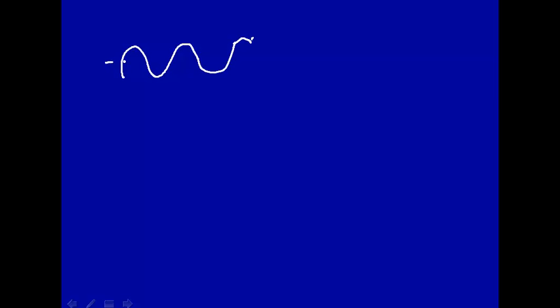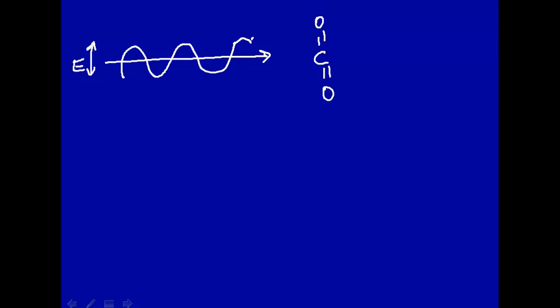Here we have an electromagnetic wave coming into the sample. The direction of propagation is this way, and the electric field oscillates in this direction here, like a transverse wave. Note that this E represents electric field rather than energy. Over here we put a molecule — let's use the carbon dioxide molecule. The oscillation is coming this way, and we want that to interact with a vibration of the carbon dioxide molecule.